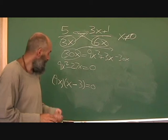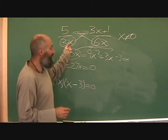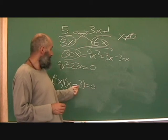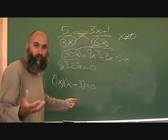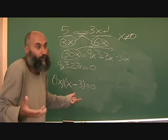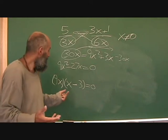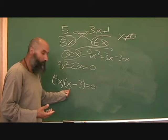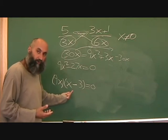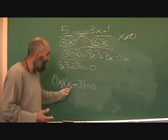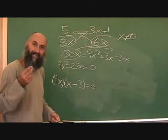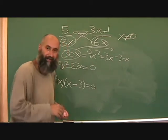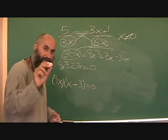Here's the zero product property, which we use when solving these types of equations. The key property is: the only way to multiply two or more things together to get zero is if at least one of them is zero.